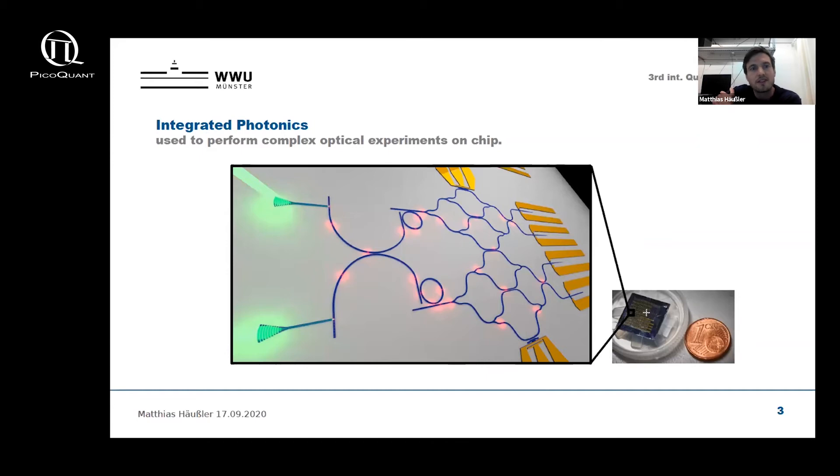Numerous nanophotonic devices on various platforms have been developed in recent years. In this schematic, for example, you can see basic passive building blocks like optical couplers, waveguides, and filters, but also active building blocks like phase shifters and detectors that can be combined in order to perform complex optical experiments on a single chip. In this work, we employ the low loss silicon nitride platform and use waveguides and splitters to set up our detector array.